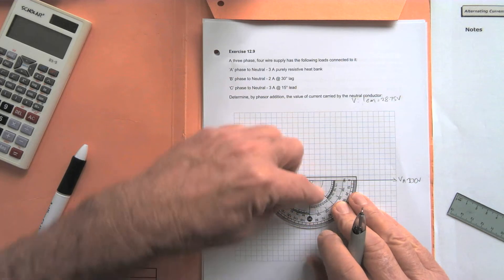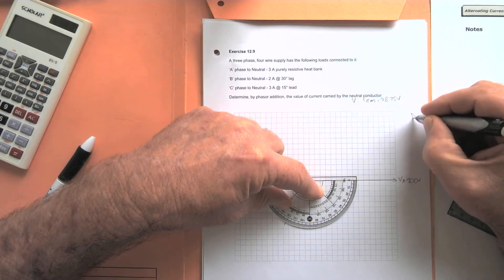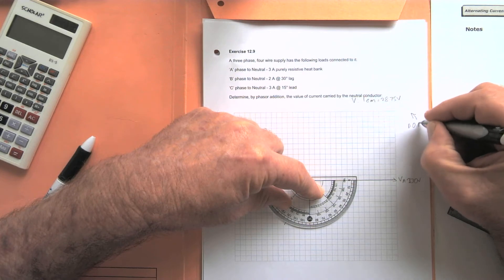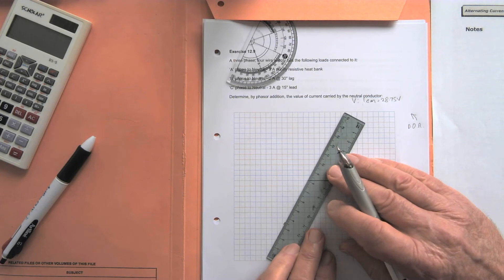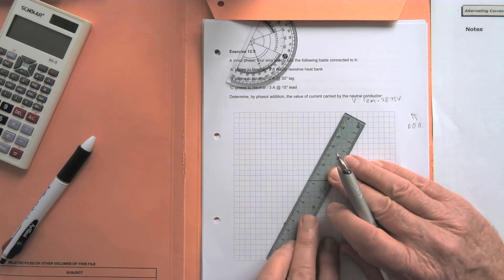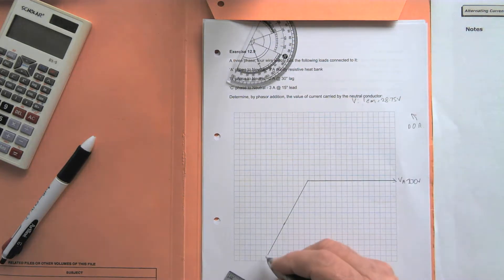120 degrees lagging. It is lagging because of the direction of rotation of the phases. So 120 degrees later, the B phase comes through the reference zero point. So draw that one in, the B phase VB, 230 volts.